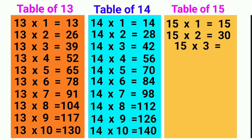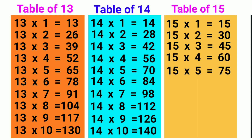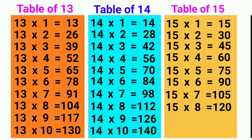15 threes are 45, 15 fours are 60, 15 fives are 75, 15 sixes are 90, 15 sevens are 105, 15 eights are 120, 15 nines are 135, 15 tens are 150.